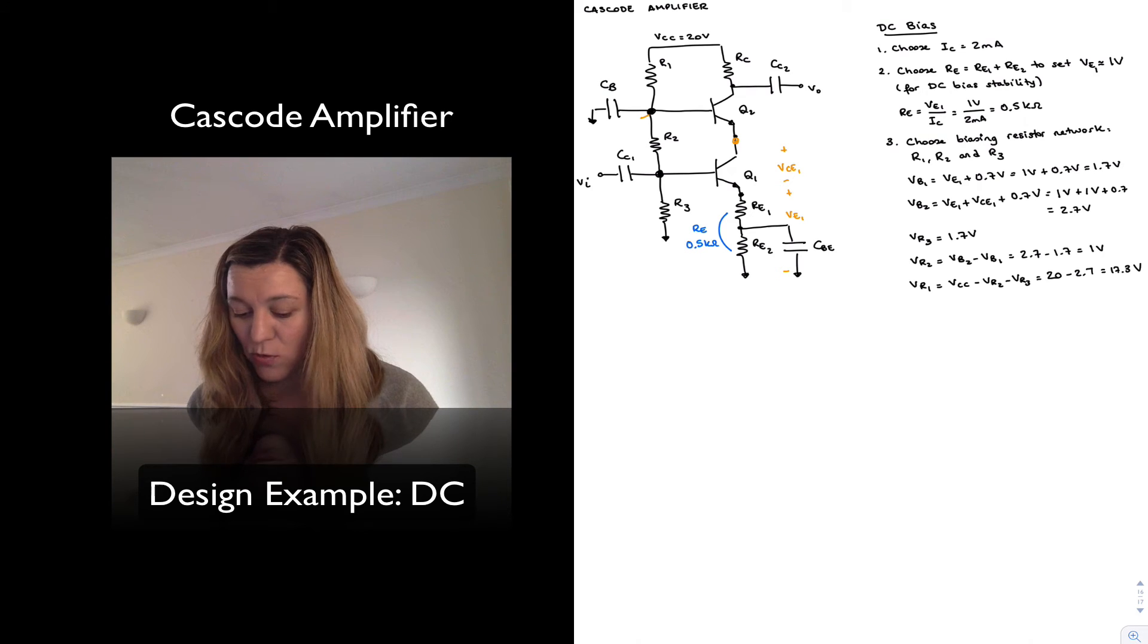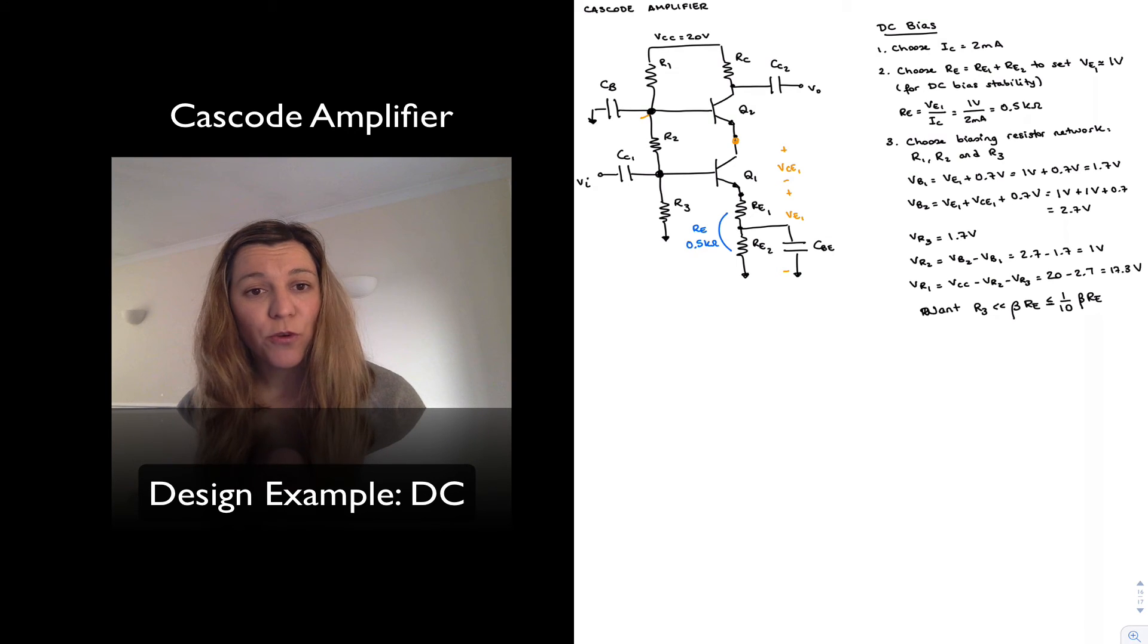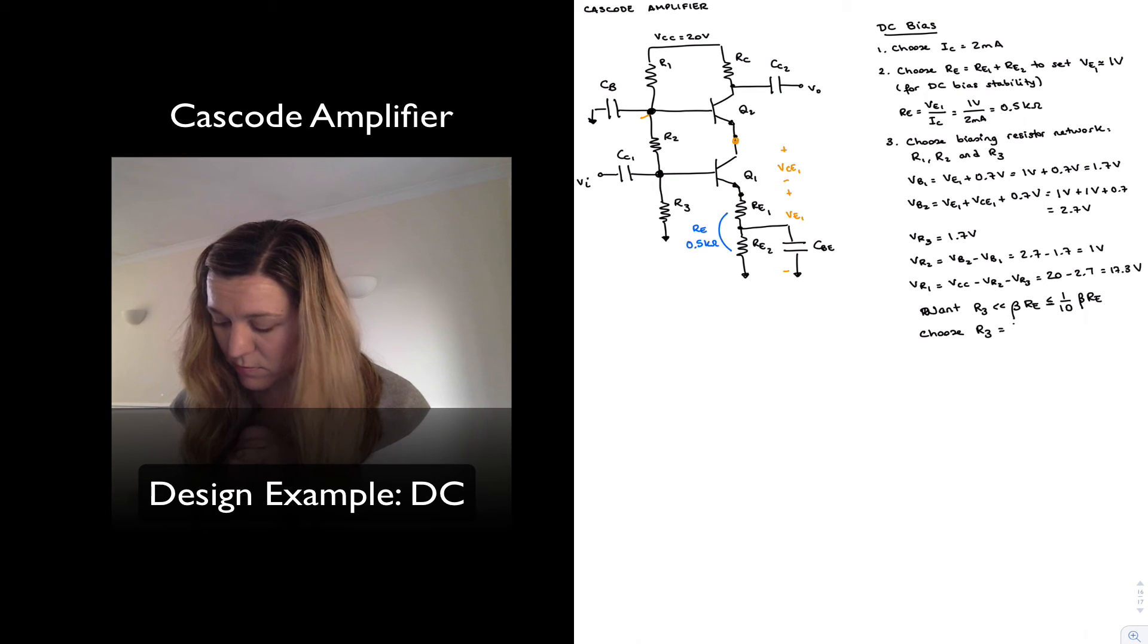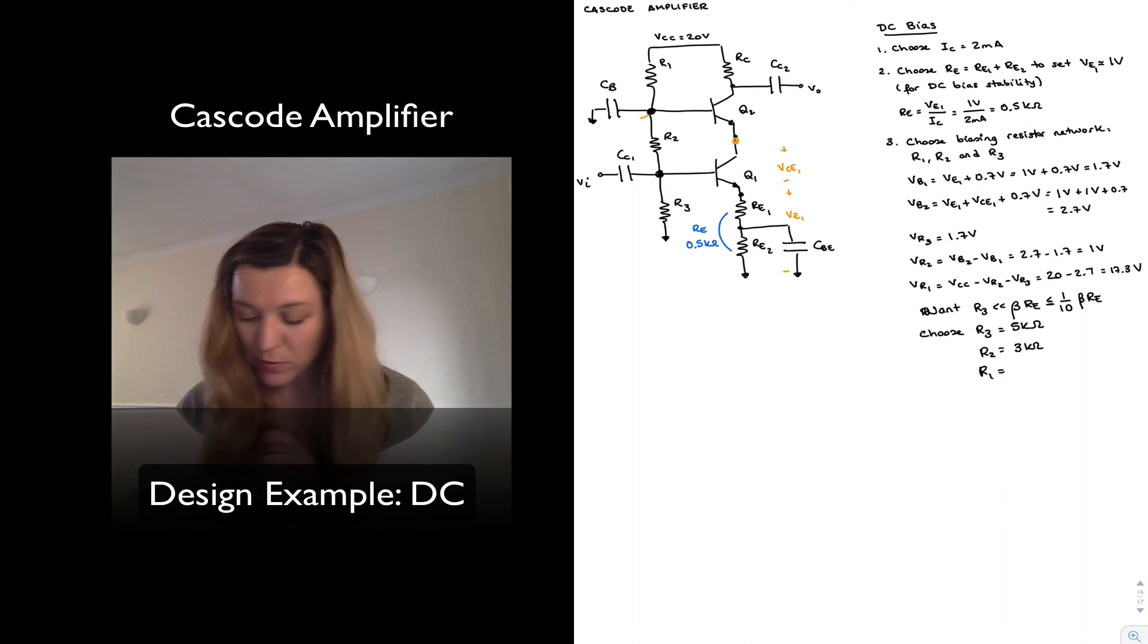Now I can select my resistor values so that I get those voltage ratios. One thing that I want to keep into consideration, just as I did before, is that in order to meet the requirements of having a perfect voltage divider at my input, I will want R3 to be much smaller than beta times the resistance looking into the emitter of Q1. So I'm going to make my selection based on the following rule of thumb: I want R3 to be much smaller than beta times RE, and much smaller was defined as less than or equal to one-tenth of beta times RE, which is 5 kilo-ohms, and so that's what I'm going to choose for my R3. If I follow now the ratios, my R2 will be equal to 3 kilo-ohms, and my R1 will be 51 kilo-ohms.